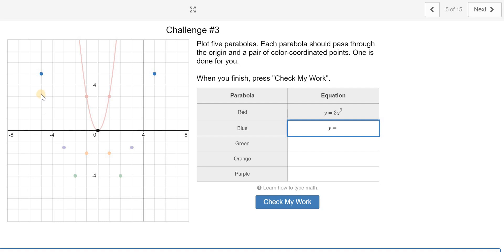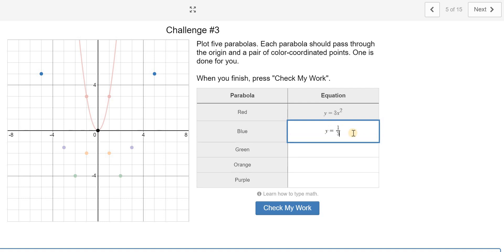But in this case, I'll only go 1, 2, 3, 4, 5. So I went 5 out of 25. So if I take 5 divided by 25, that's the same as 1 fifth x squared.